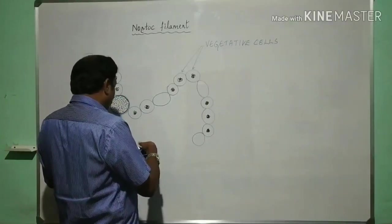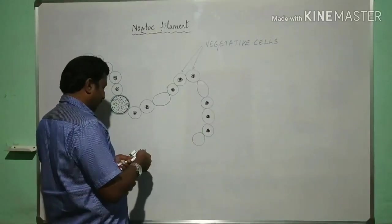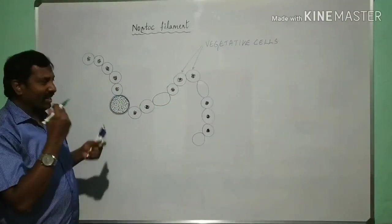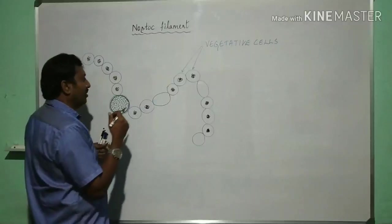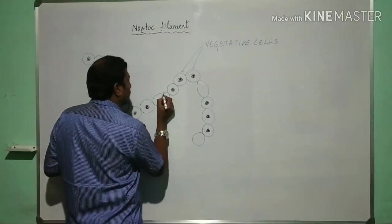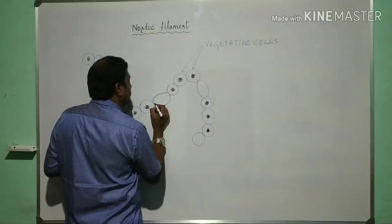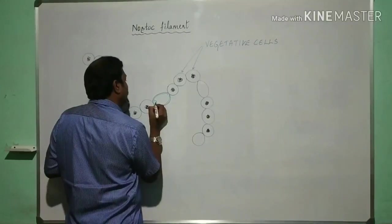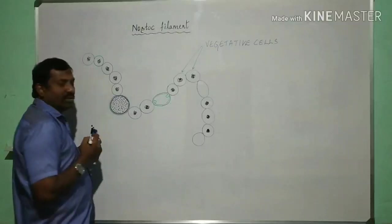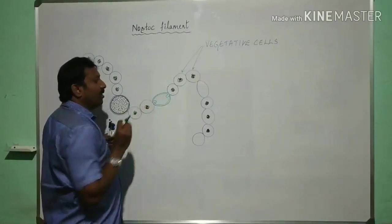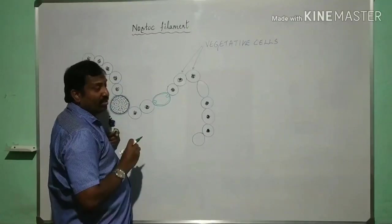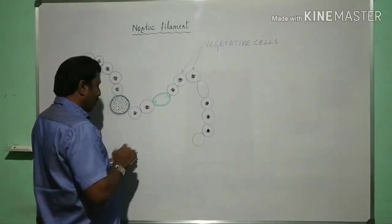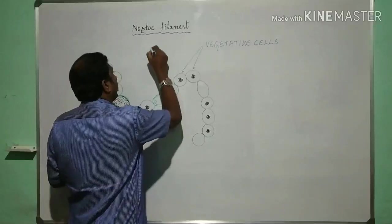And here we find some specialized cells which are pale yellow colored. I will take a green color inside it, pale yellow colored cells normally won't take any stain. Thick wall cells, empty looking cells, you cannot find the nucleoplasm that is the nuclear material which is present here in the primitive state in other cells. And you can find these cells are called heterocyst.